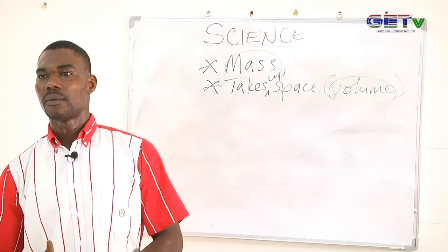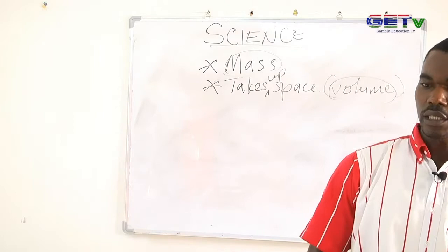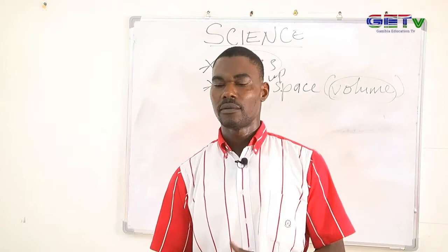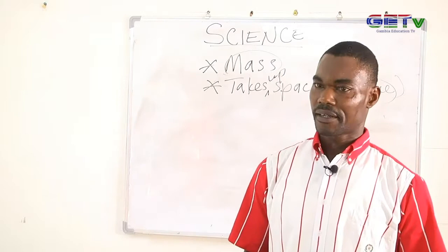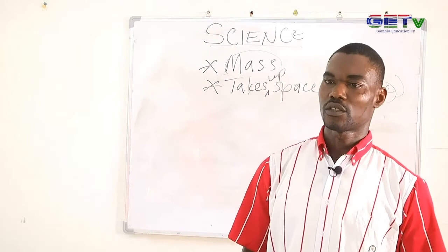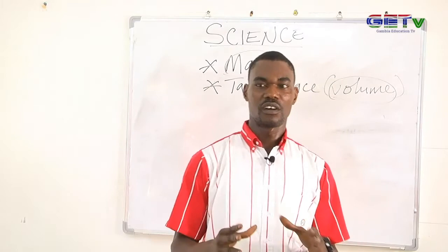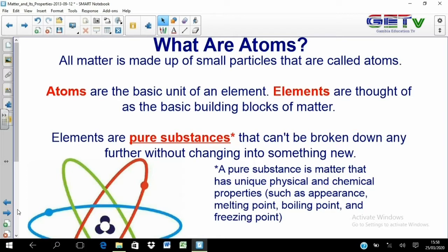Where does matter come from? Matter comes from particles called atoms — very small particles that cannot be seen by the naked eye, but they come together to form matter. Matter is made of atoms, and all matter is made of small particles called atoms. Atoms come together to make up matter.